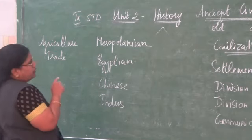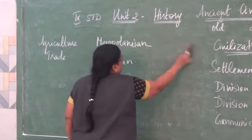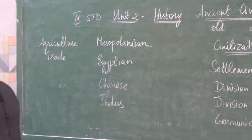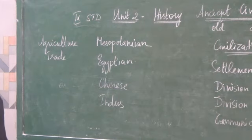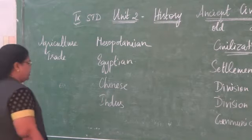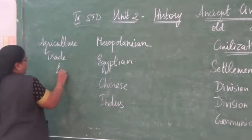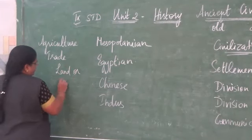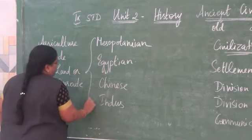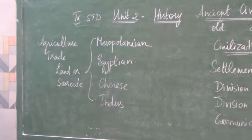With the beginning of civilization, the hunter-gatherer mode was no more. People started cultivating crops — agriculture was the main occupation. Food production was in surplus, so they started trading with each other, either by land or sea route. All four civilizations had trade communications with each other.